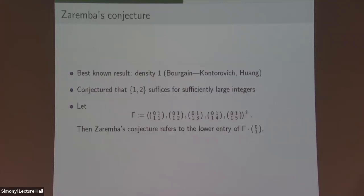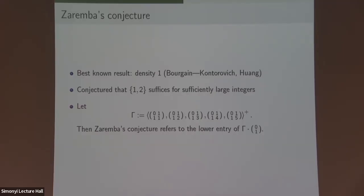What is 'thin' exactly? It's infinite index in the obvious group — the semi-group sits in a subgroup of SL of infinite index. There are multiple floating definitions of what thin means. For a semi-group, you look at the growth rate of the orbits, and the growth rate is much less than the natural group it sits in — it's not large enough to be the whole group, but not so small that it's trivial.